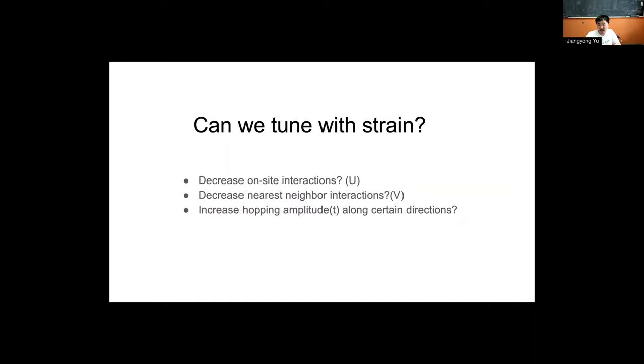We think maybe we can decrease the on-site interaction or the nearest neighbor interaction, which means the particles won't feel each other as much and can feel freer to move around. Or maybe we can even just straight up increase the hopping amplitude